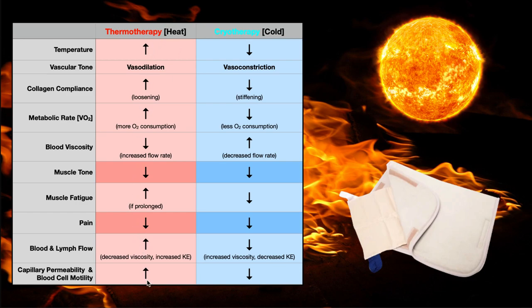All of these effects are just going to be in the area where the heat is applied. So if we apply the heat to the low back, we're not going to get these effects in the legs or the arms — these are all local. Obviously applying heat is going to give us an increase in local temperature, and that local temperature increase is also going to lead to vasodilation in that area, so the blood vessels in that area are going to dilate. This is a natural response to dissipate heat. However, this vasodilation is also going to lead to increased blood flow to that area, which is actually part of the reason why we want to use heat.